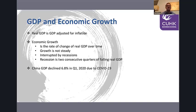GDP in China in the first quarter of this year dropped by 6.8%. In the United States this quarter, it will be dropping by over double digits. Unemployment in the United States right now is arguably around 15% to 20%. These are big dislocations, as opposed to December of last year when the world was at full employment and unemployment was near an all-time low. COVID-19 has had a big impact.